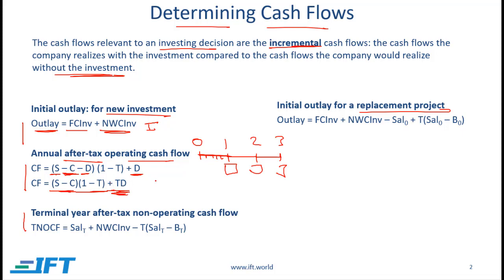Keep in mind that the operating cash expense does not include any financing cost. The financing cost is built into the discount rate used to calculate the net present value. In any case, remember this formula: for every year, the cash flow is (S - C)(1 - t) plus the depreciation tax shield.